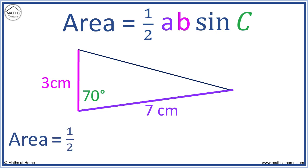So the area equals 1/2 × 7 × 3 × sin 70, which can be calculated on a calculator to be approximately 9.87. The units are centimeters squared.